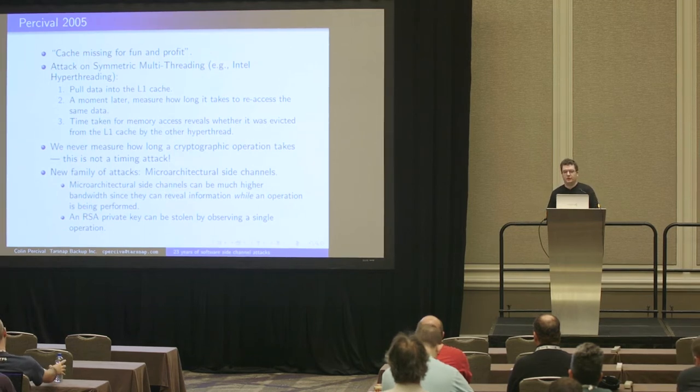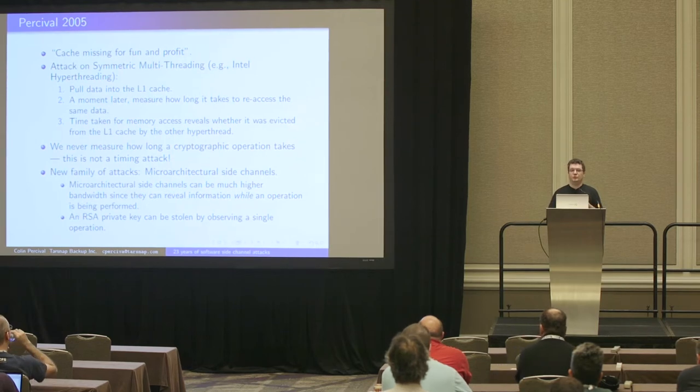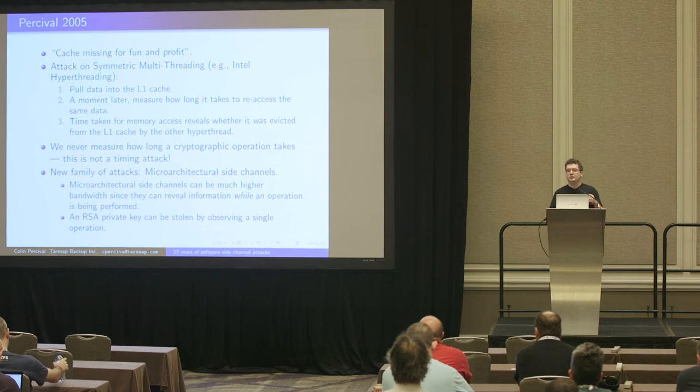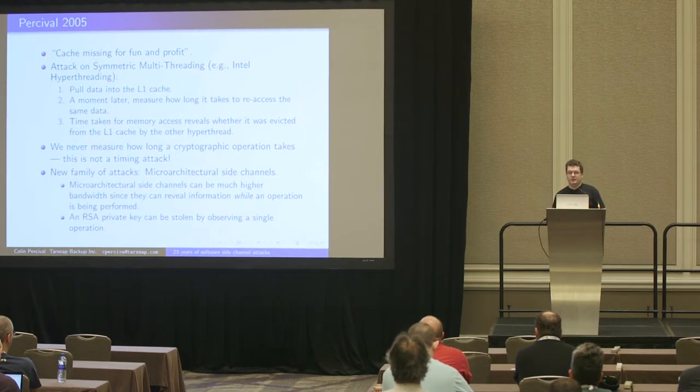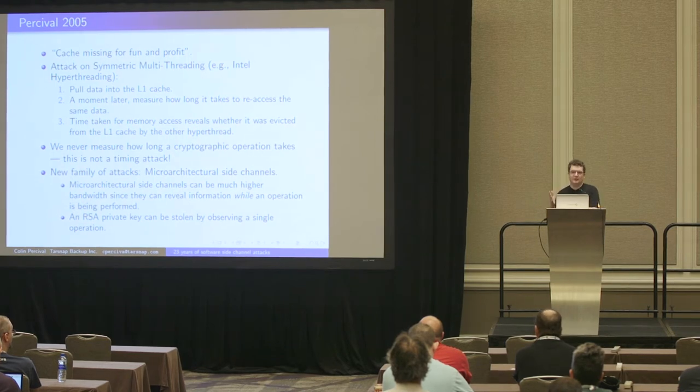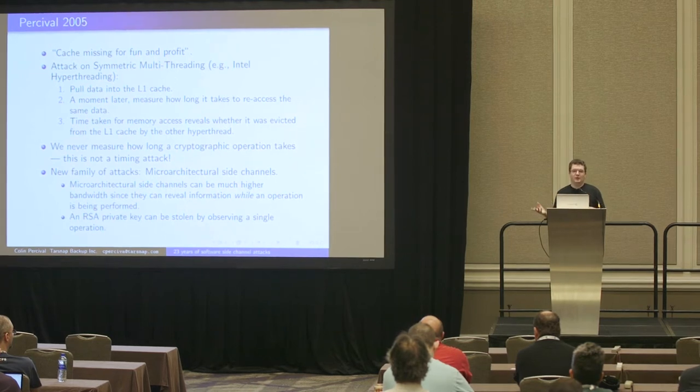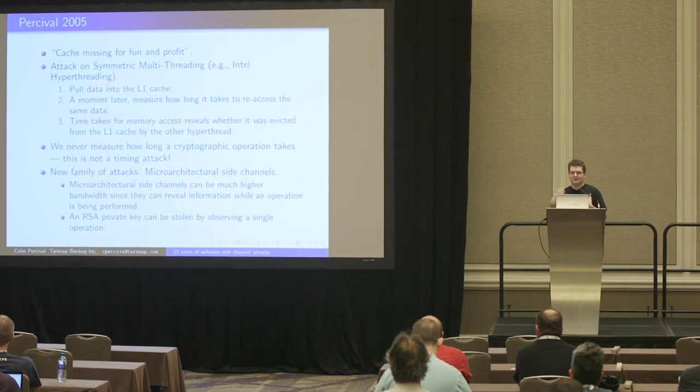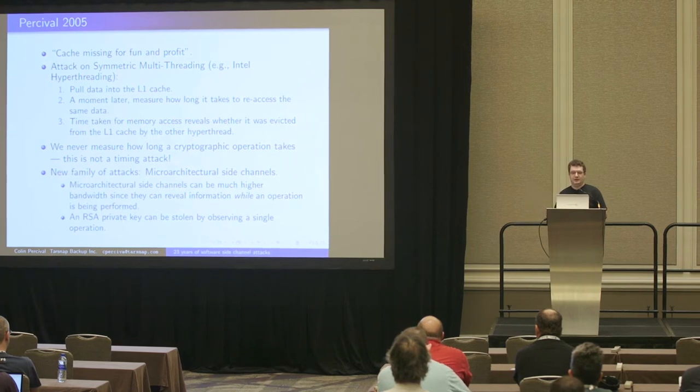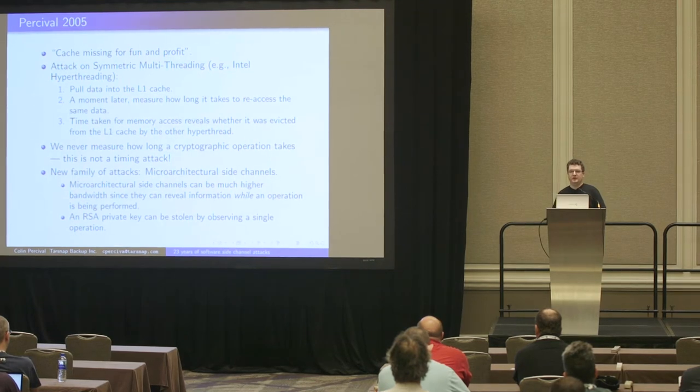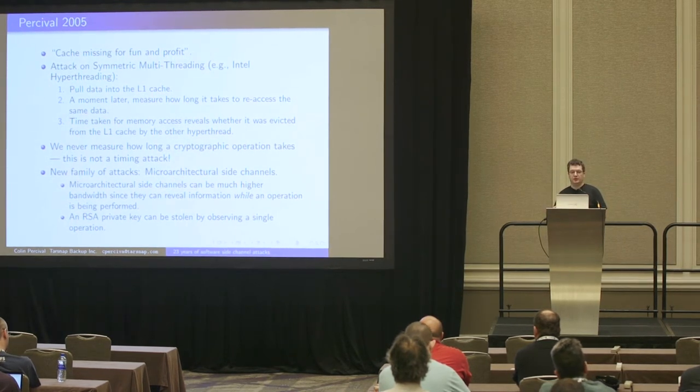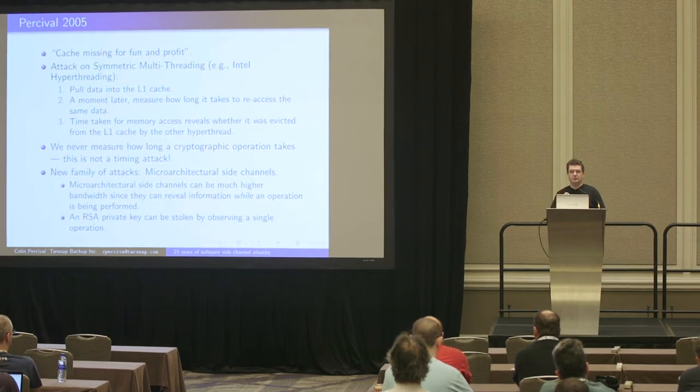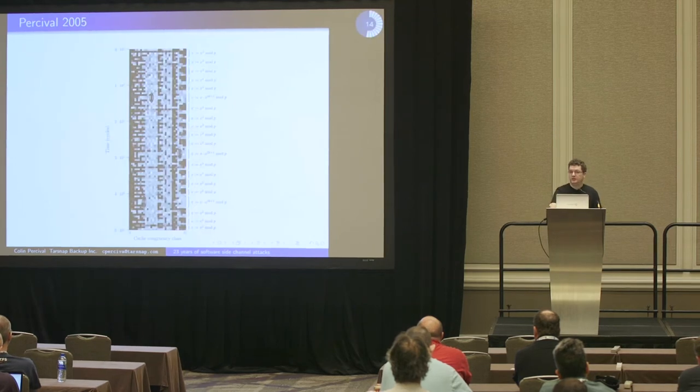Microarchitectural side channels are very interesting because they can have much higher bandwidth. If you're timing how long an operation takes, RSA, for instance, you know one number. How long did it take? That might give you one bit of information. Was it fast? Was it slow? More often it will give you less than one bit of information. But with microarchitectural side channels, there's a lot more bandwidth. And in fact, in this case, I was able to steal the RSA private key just by looking at one operation taking place. Because I was reading information out of the cache state all the way through the RSA operation, and rather than just having one value, there were multiple different cache sets.